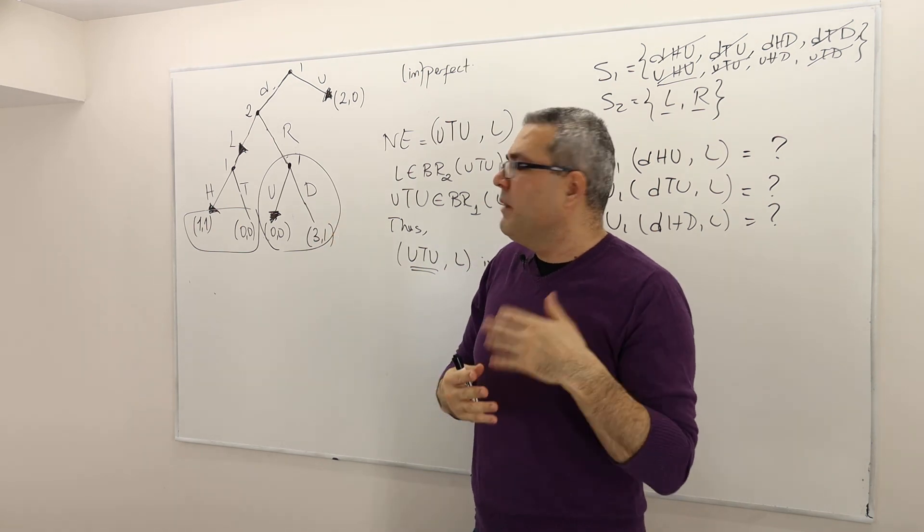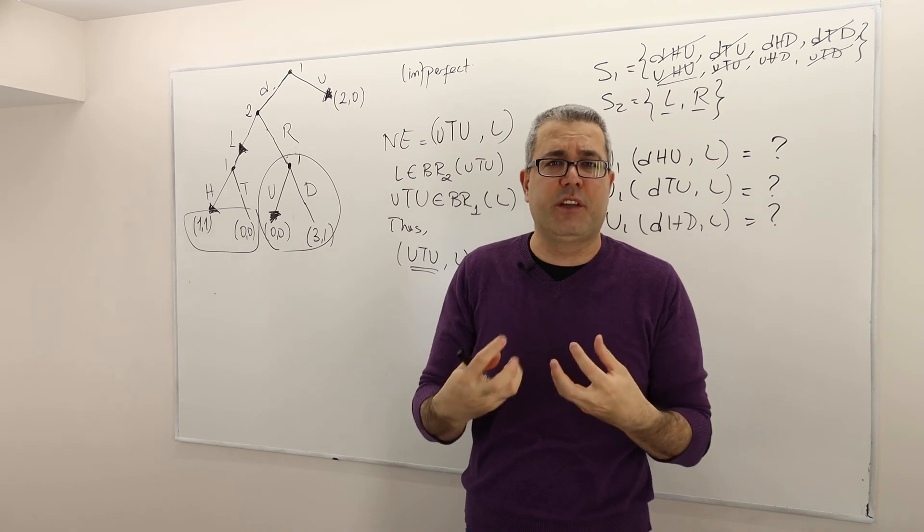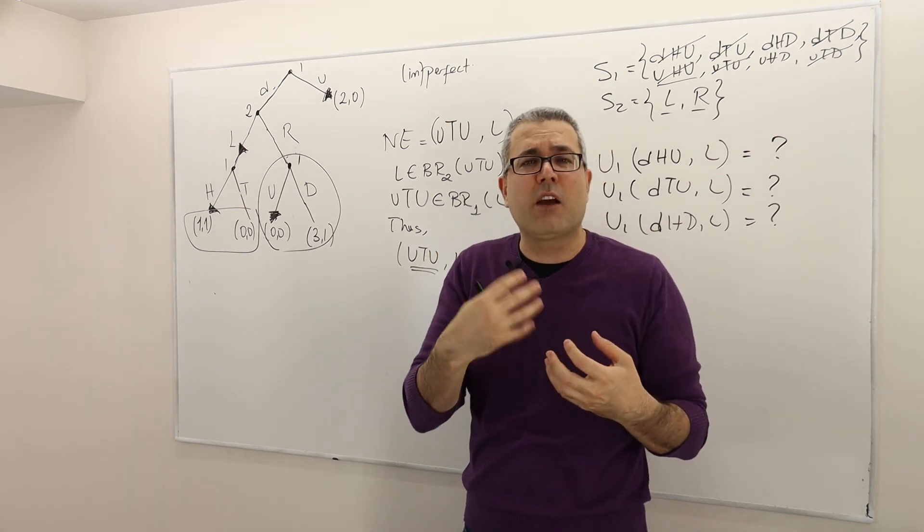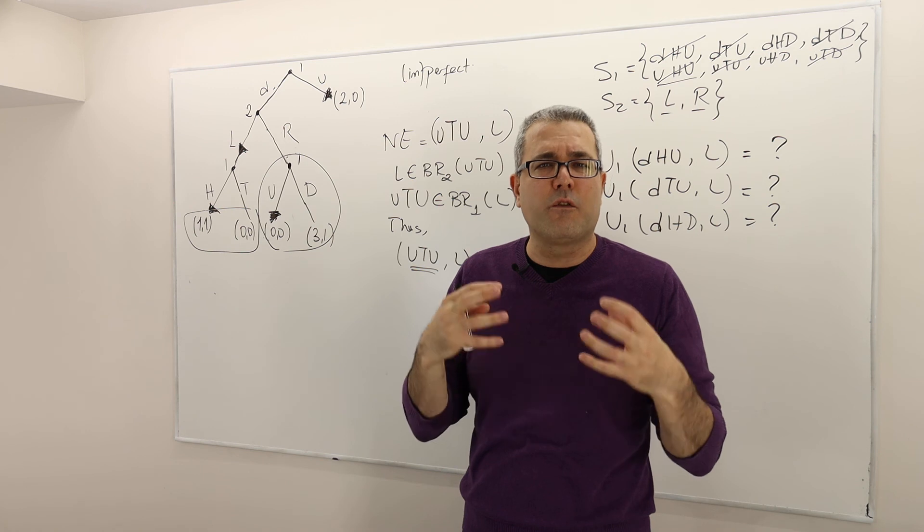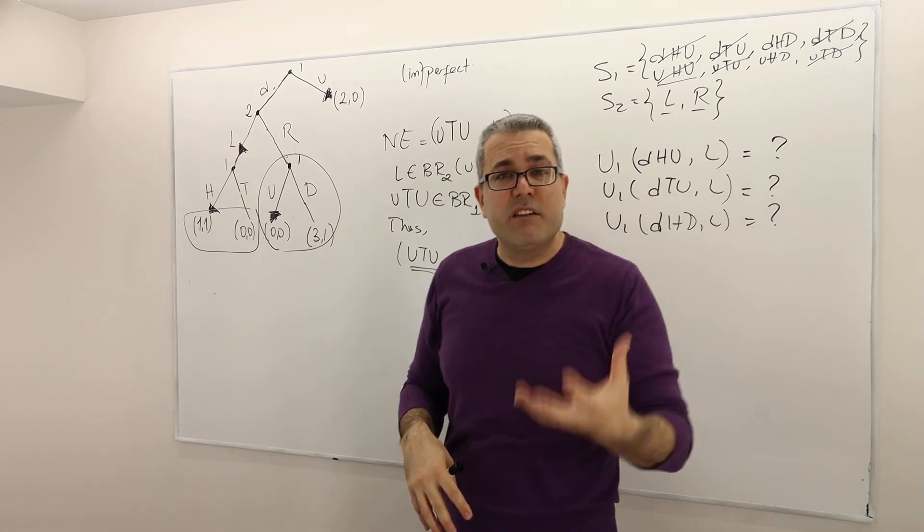But what is missing maybe is why Nash does not capture this, but SPNE or backward induction does capture this idea of non-credible threat. Well, here is the reason.